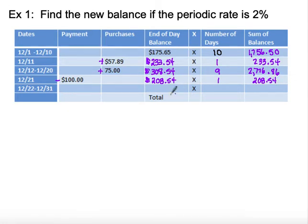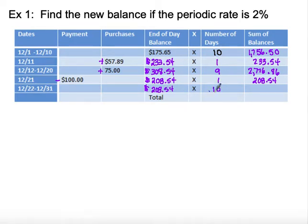No other transaction happened for the rest of the month, so we stay steady with an end-of-day balance of $208.54. A quick calculation shows 31 minus 22 plus the extra day means it sat there for 10 days, giving us $2,085.40.